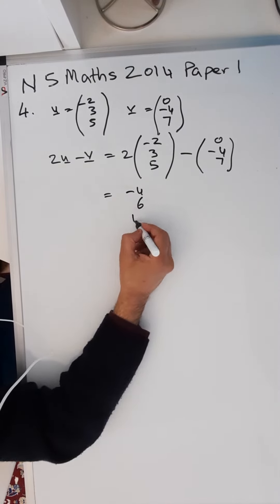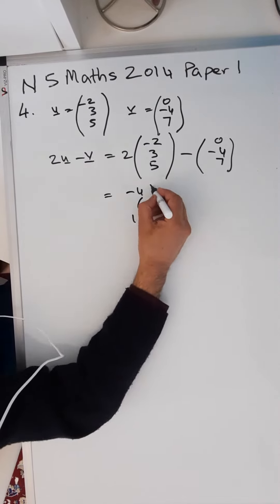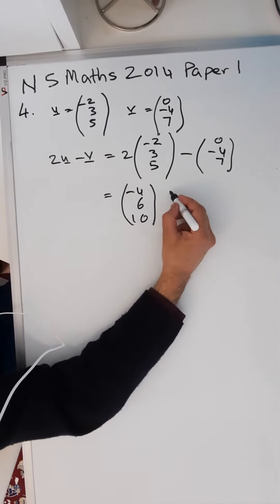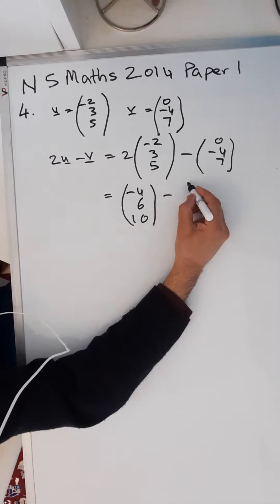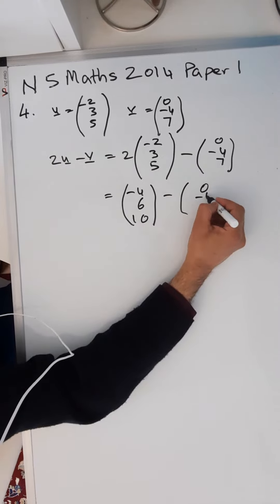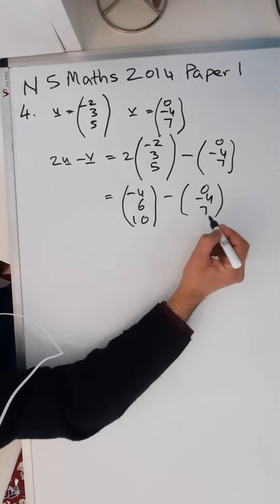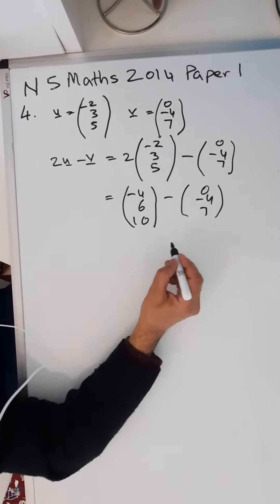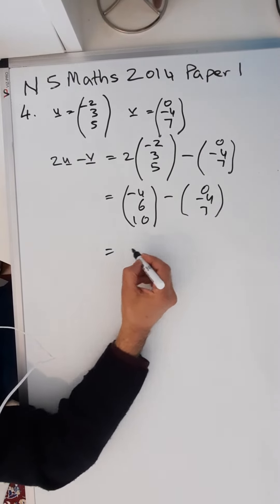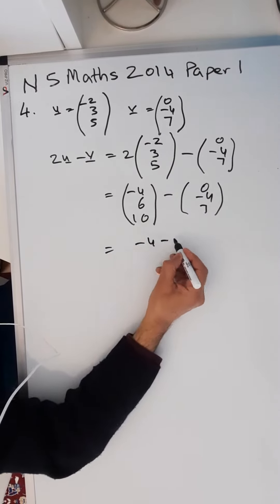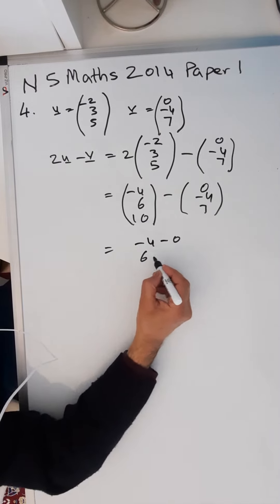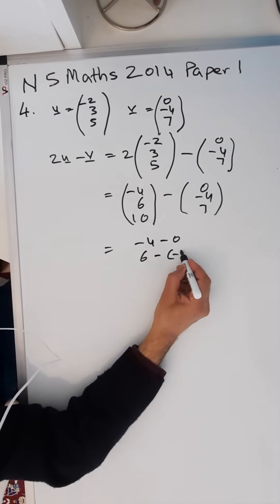Two times five is ten. And you're taking that away, so minus zero, minus four, seven. This is a two-mark question, so you're taking minus four minus zero, six minus minus four.